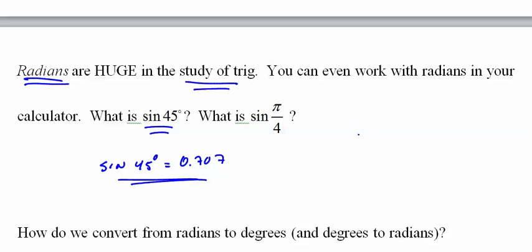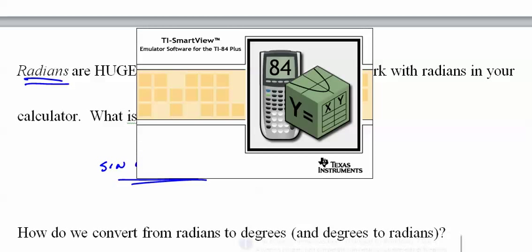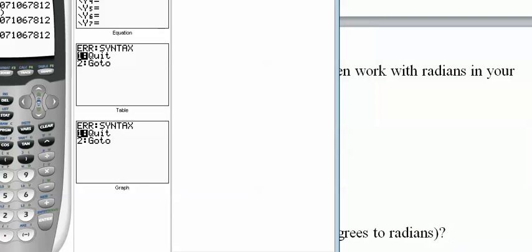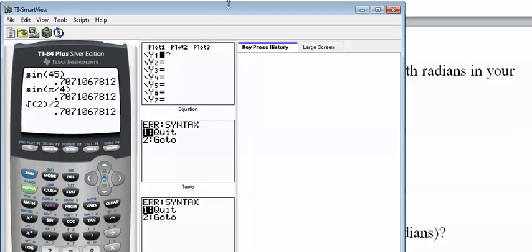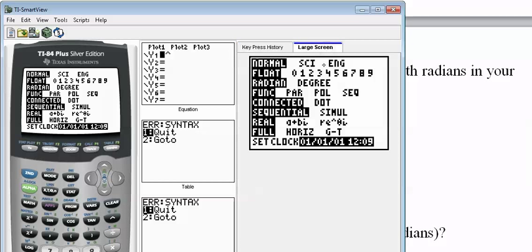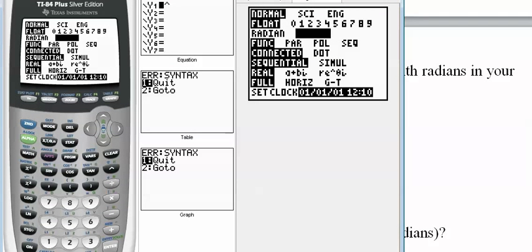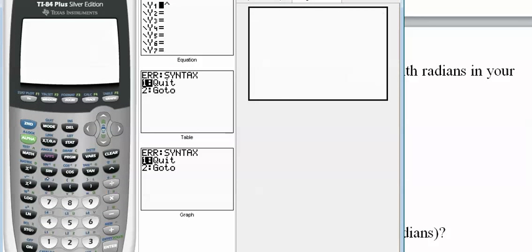If you put your calculator into radians - hit mode and you go down, and if you're in radians you can change it over to degrees. Hit enter here. Quit out of that and you go sine of 45, you get that.